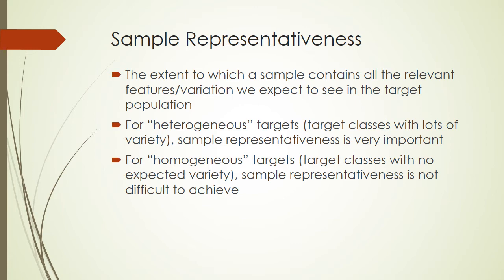Some target populations have more variety than others. The more varied your target population, the more difficult it might be to achieve sample representativeness. Heterogeneous target populations have targets with lots of diversity or variety, and in these cases sample representativeness is important and might be a little bit more difficult to achieve. However, some targets do not have any expected variety with respect to the property or attribute in question. We call these homogeneous target populations. When we're dealing with a homogeneous target population, sample representativeness is not difficult to achieve.